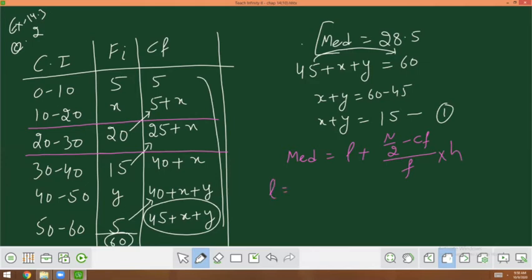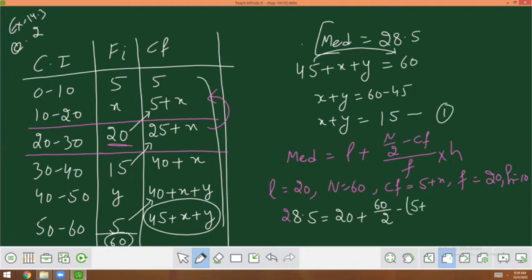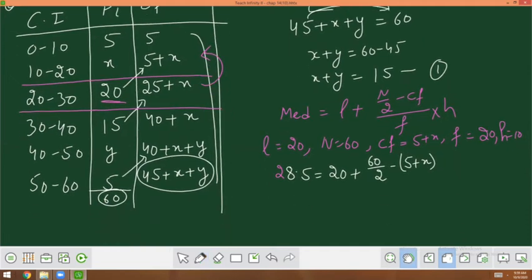L is the lower limit, that is 20. N by 2, N is 60. Clear? CF is what we choose before this interval, that is 5 plus x. And f is the frequency of this term, that is 20. And h is 10. All values are given. Median is also given 28.5. So 28.5 is equal to L which is 20 plus n by 2, 60 by 2 minus CF.